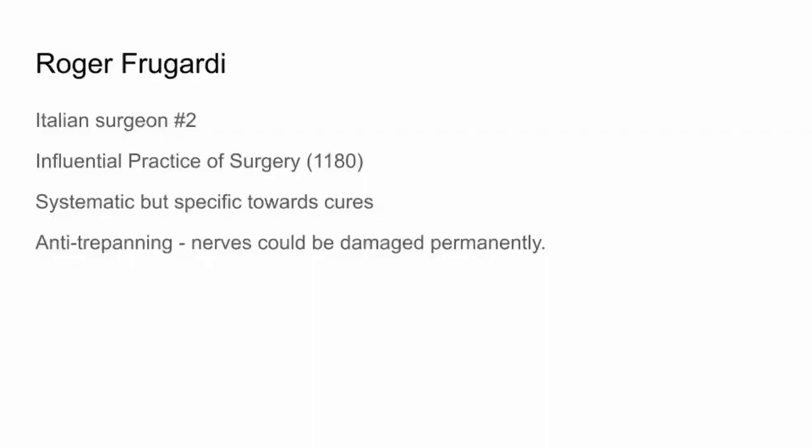Frugardi — Italian surgeon number two. He published the influential Practice of Surgery. He promoted a systematic but specific approach towards cures, and he was anti-trepanning — which is basically where you drill a hole in your skull and the evil spirits are supposed to come out. Frugardi said that was a bit daft, because nerves can actually be damaged permanently. Pretty smart thing to say.